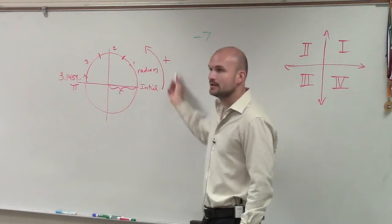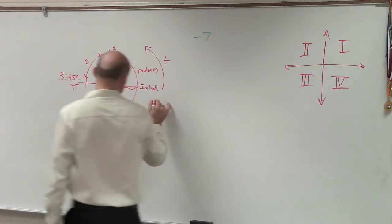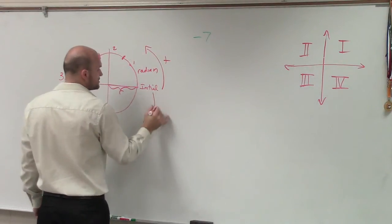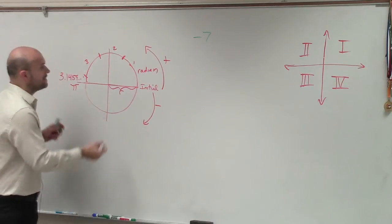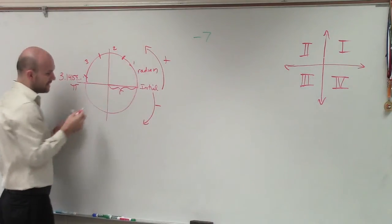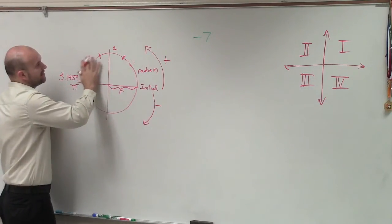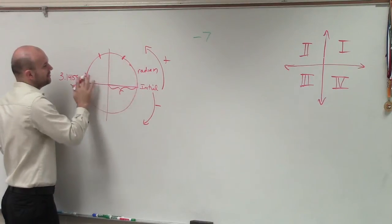Here's your initial side. Counterclockwise is positive, so therefore clockwise is going to be negative. So rather than going this way, now I need to go negative 7. So let's kind of erase these and see where exactly would that be.